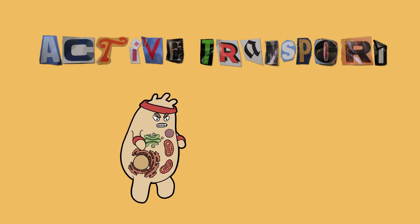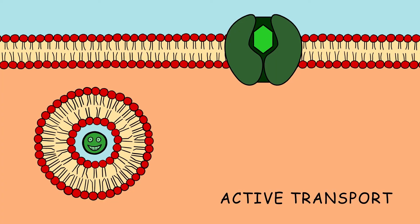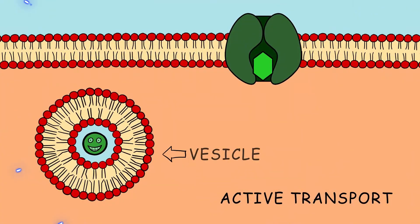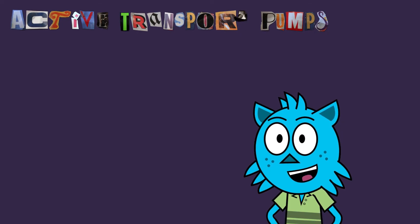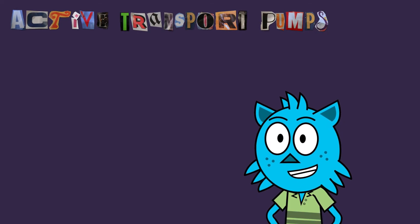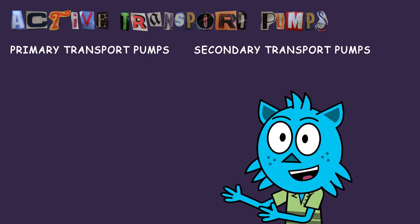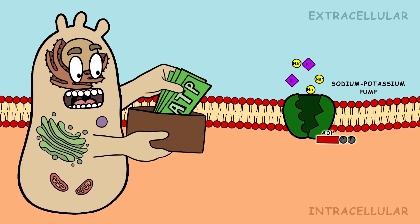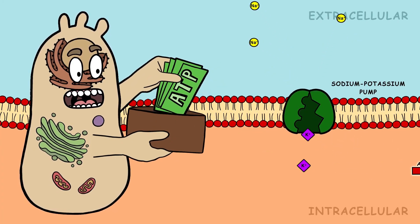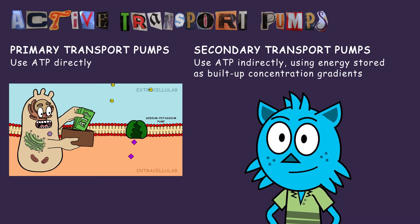Now let's cover active transport. As a reminder, this kind of transport requires energy and uses either vesicles or pumps. Active transport pumps come in two flavors, primary and secondary transport pumps. The difference is that while primary transport uses ATP directly, secondary transport uses it indirectly, using energy stored as built-up concentration gradients.